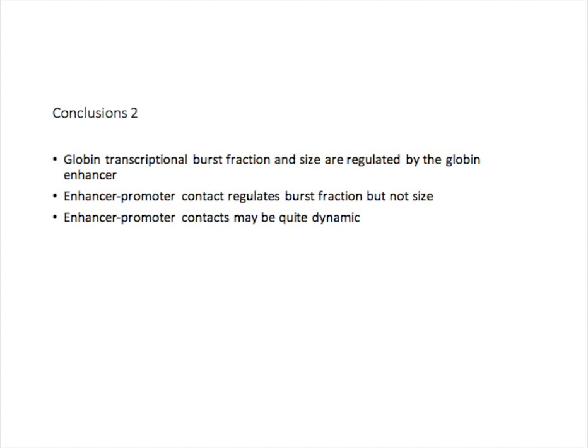To summarize all our findings: we've seen that both burst fraction and burst size of the globin gene are controlled by the globin enhancer, and especially burst fraction is decreased if the enhancer is absent. Enhancer-promoter looping specifically controls burst fraction. And we've shown evidence to suggest that enhancer-promoter contacts may be quite dynamic.